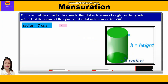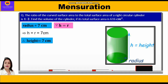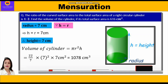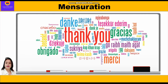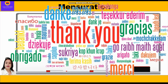Since h = r, the height is also 7 cm. Now we find the volume using the formula πr²h: Volume = (22/7) × 7² × 7 = 1078 cm³. So the volume of the cylinder is 1078 cm³. Hope you have understood this question. Please don't forget to like and subscribe. Thank you everyone.